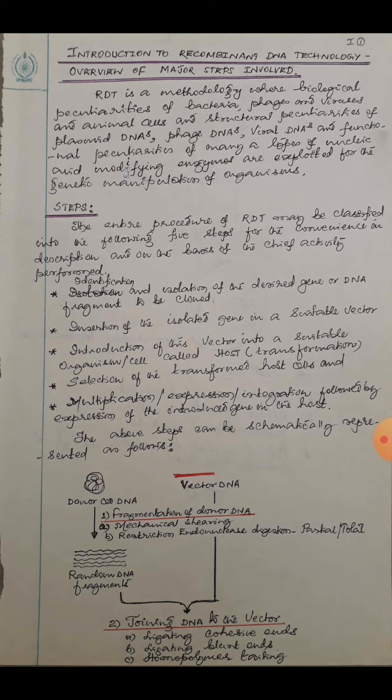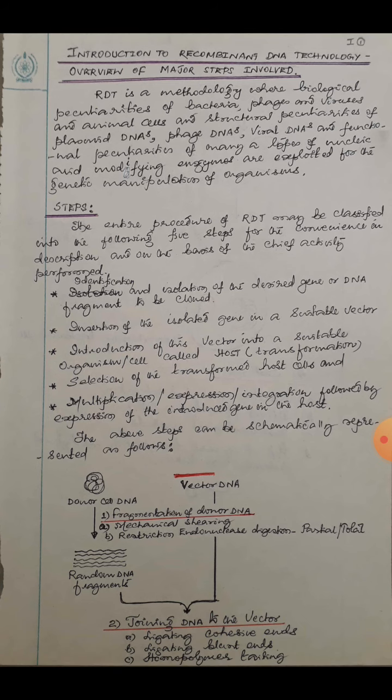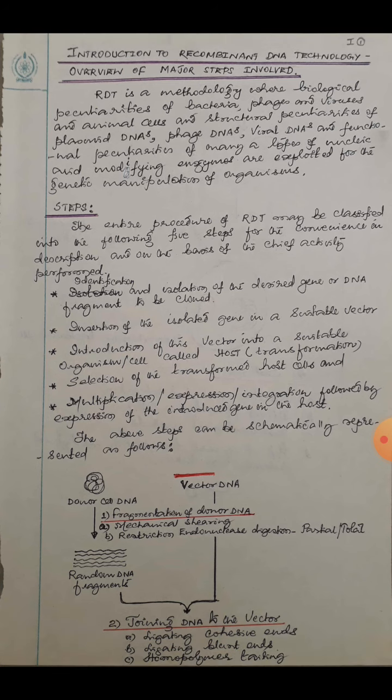I have put these same steps in a schematic diagram form. Here is the donor cell where you have extracted the genome — there is a particular protocol for that. When this donor cell DNA needs to be fragmented, there are different methods, either by mechanical shearing or by the use of restriction endonucleases, which I am going to teach in the next class. Finally, you will get random DNA fragments, and one of the fragments may contain the gene of your choice.